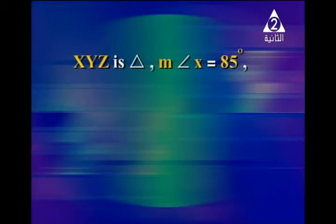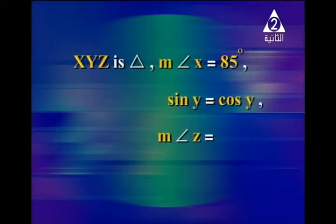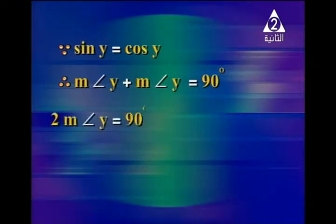Another example: XYZ is a triangle, measure angle X equals 85 degrees, sine Y equals cosine Y. Then measure angle Z equals how many degrees? Since sine Y equals cosine Y, it means measure angle Y plus measure angle Y equals 90 degrees. So double measure angle Y equals 90 degrees, and dividing both sides by 2 gives measure angle Y equals 45 degrees.